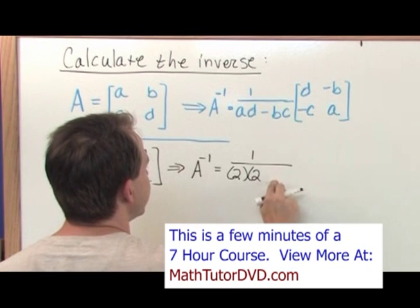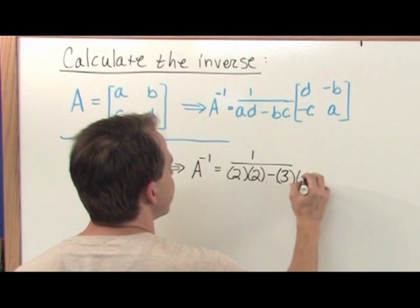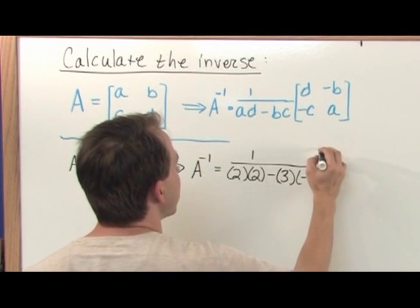Actually, what I need to do, 2 times 2 minus B times C, 3 times negative 1. Okay, that's the first part.